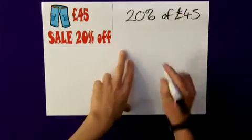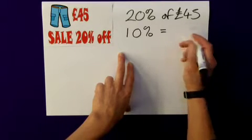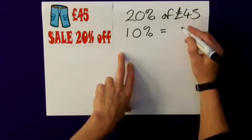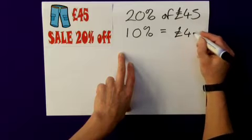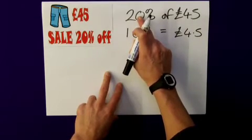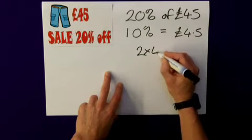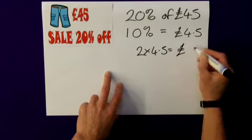I would start by finding 10%. Now, this is the equivalent of 1 tenth. So I would simply divide that by 10, and that would give me £4.50. But I don't want 10%, I want 20%, so it's simply double this. So 2 times my 4.5 would equal £9.